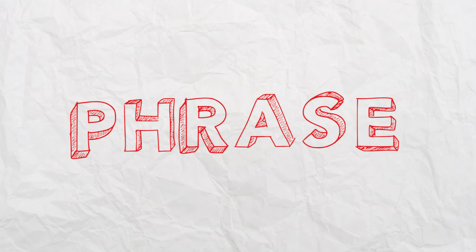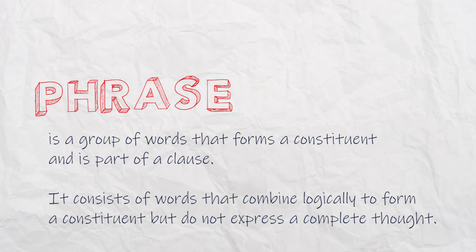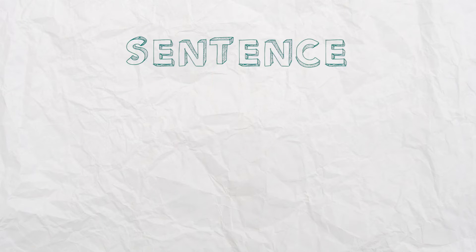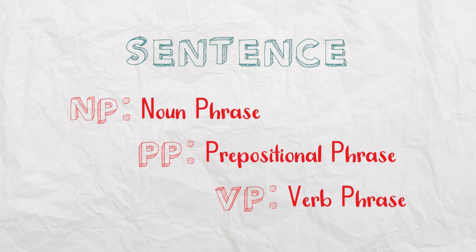So what is a phrase? A phrase is a group of words that combine logically to form a constituent. There are constituents within clauses, and in this case within the sentence, but they do not express a complete thought. Typically a phrase consists of more than one word and it doesn't have the subject-predicate structure of a clause. A phrase is abbreviated to P. So in a sentence you can have an NP (noun phrase), PP (prepositional phrase), VP (verb phrase), etc. We have covered these in the videos about syntax.